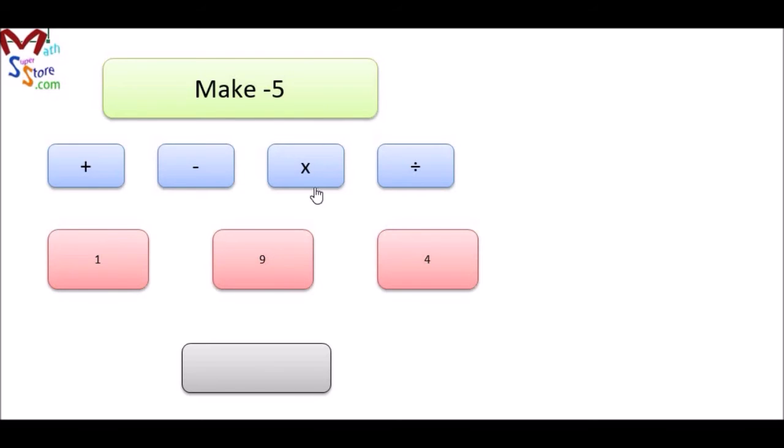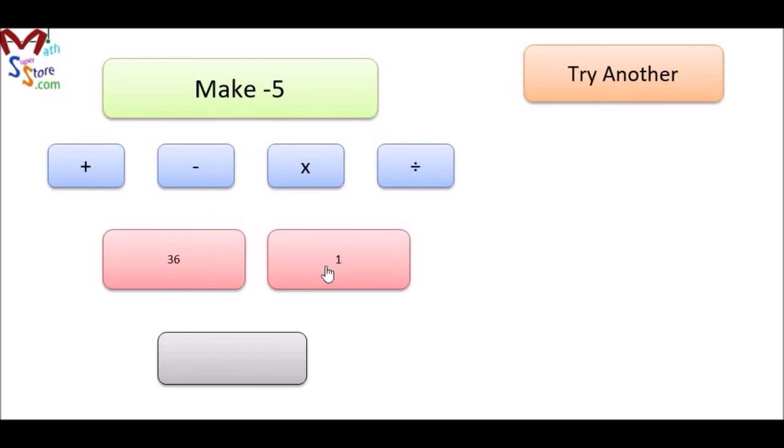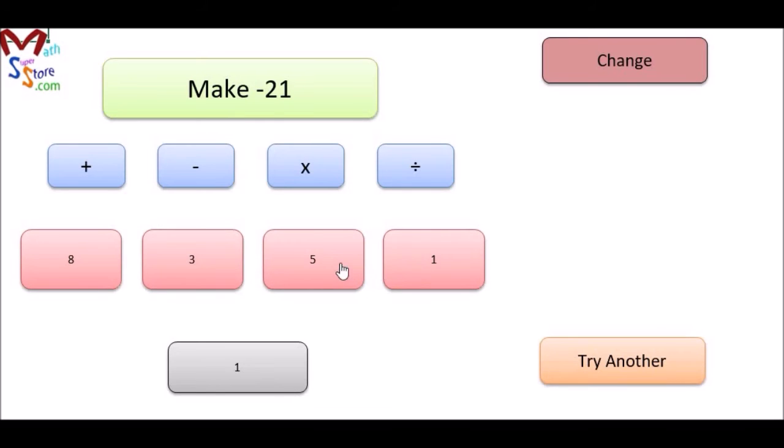But if we get it wrong—let's say 4 times 9—we've got 36 and we can't make it. If we get it wrong, it will show an example. There may be other right answers, but every single one is possible.